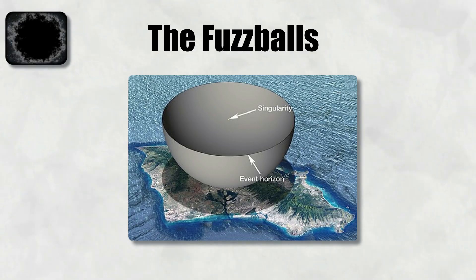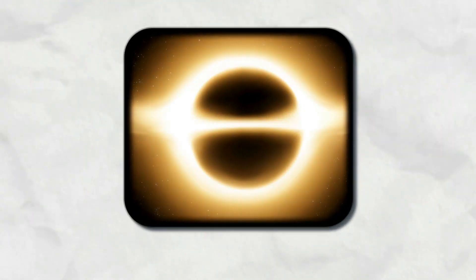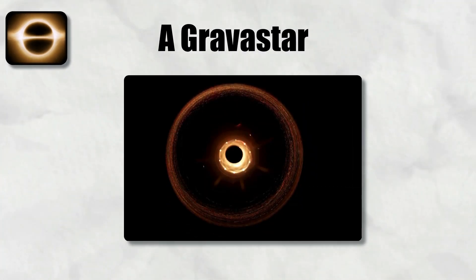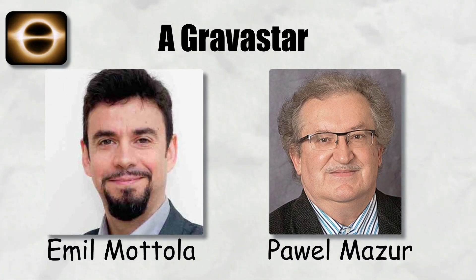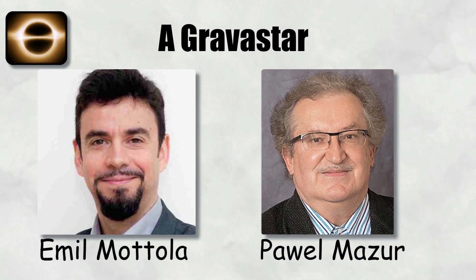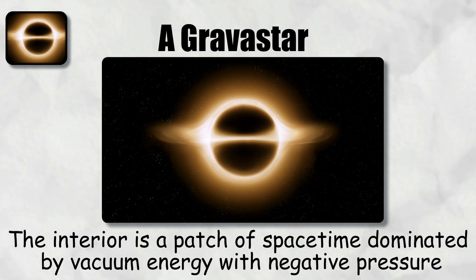Gravastars. A gravastar, or gravitational vacuum star, is designed to avoid both singularities and event horizons. The model, proposed by Powell Mazur and Emil Mottola in 2001, replaces the black hole interior with a new state of matter energy. Specifically, the interior is a patch of space-time dominated by vacuum energy with negative pressure, similar to the cosmological constant that drives cosmic acceleration.